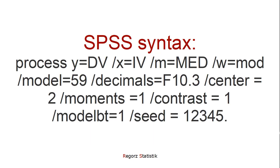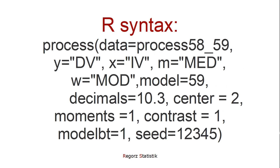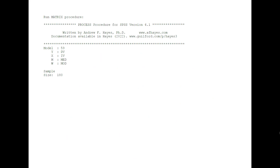Of course, we could use SPSS syntax instead — this would be syntax achieving more or less the same. We could also run it with R syntax; this would be the R syntax for process model 59. The output for all three options is basically the same. Our next step is looking at the output. First I will explain process model 59, and then I will explain the very small differences you would get if you use process model 58 instead.